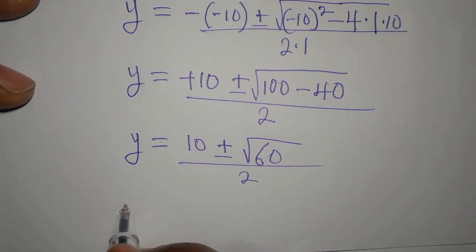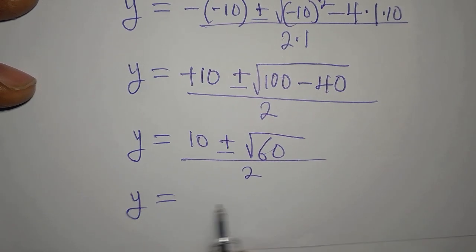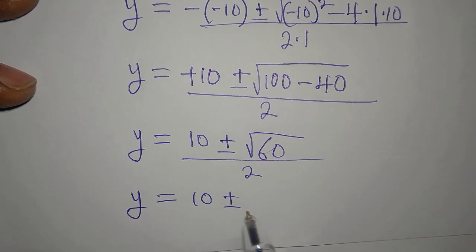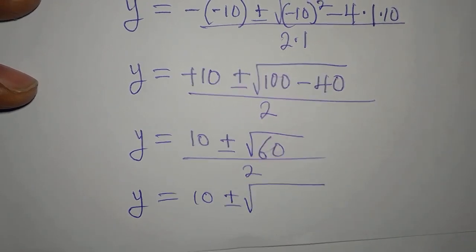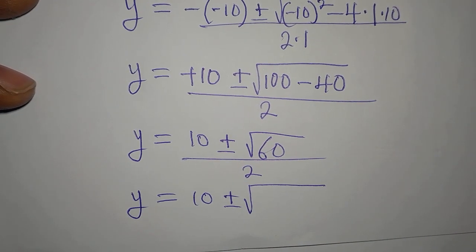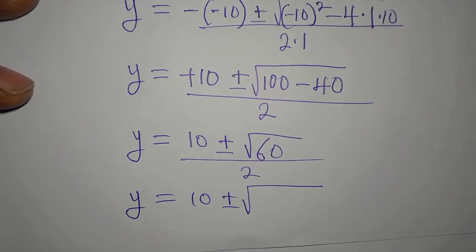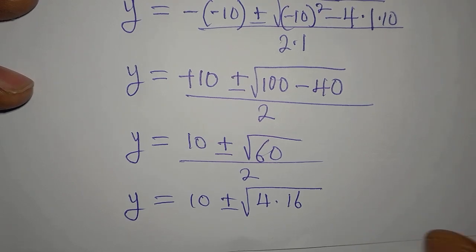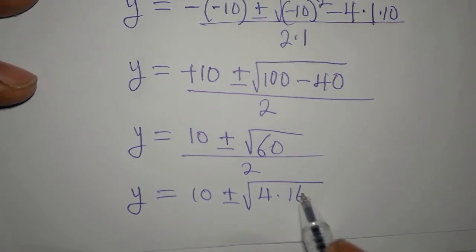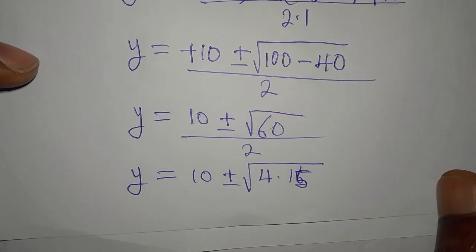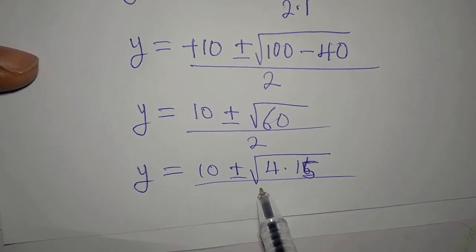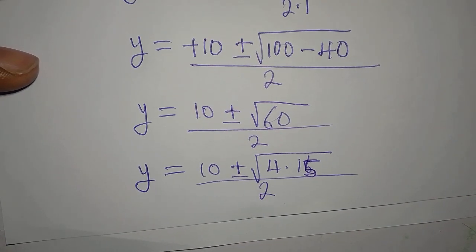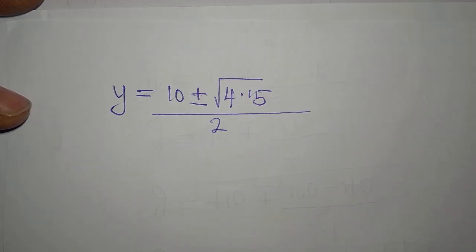Y equals, square root of 60. 60 right there is 4 multiplied by 15. Then we divide it by 2.